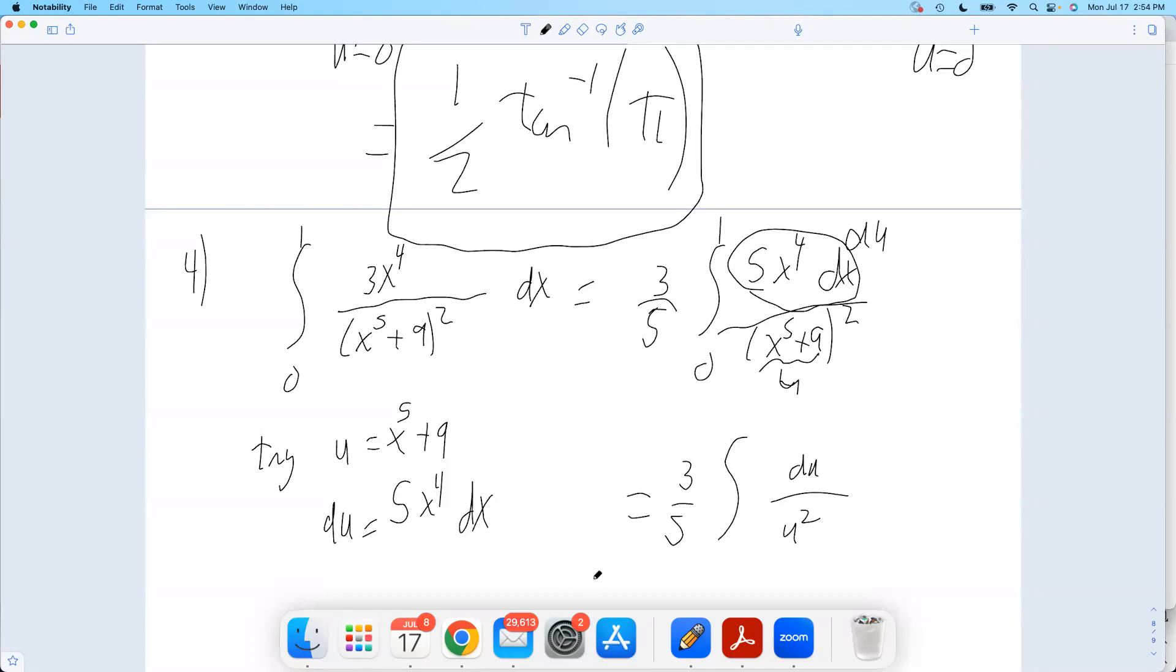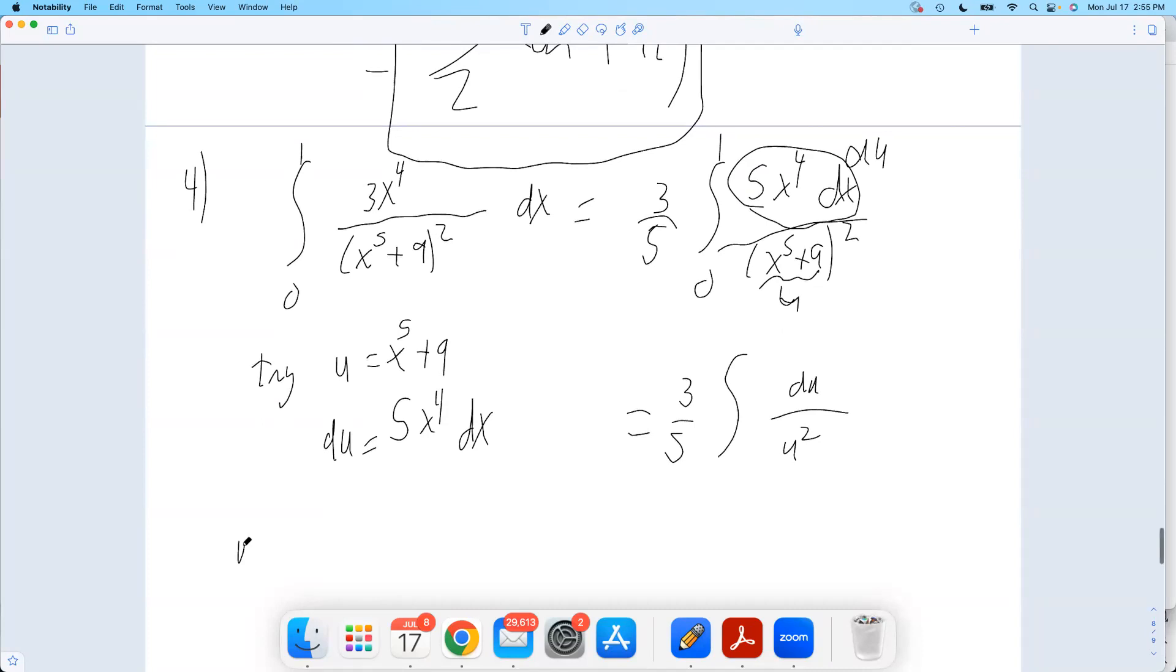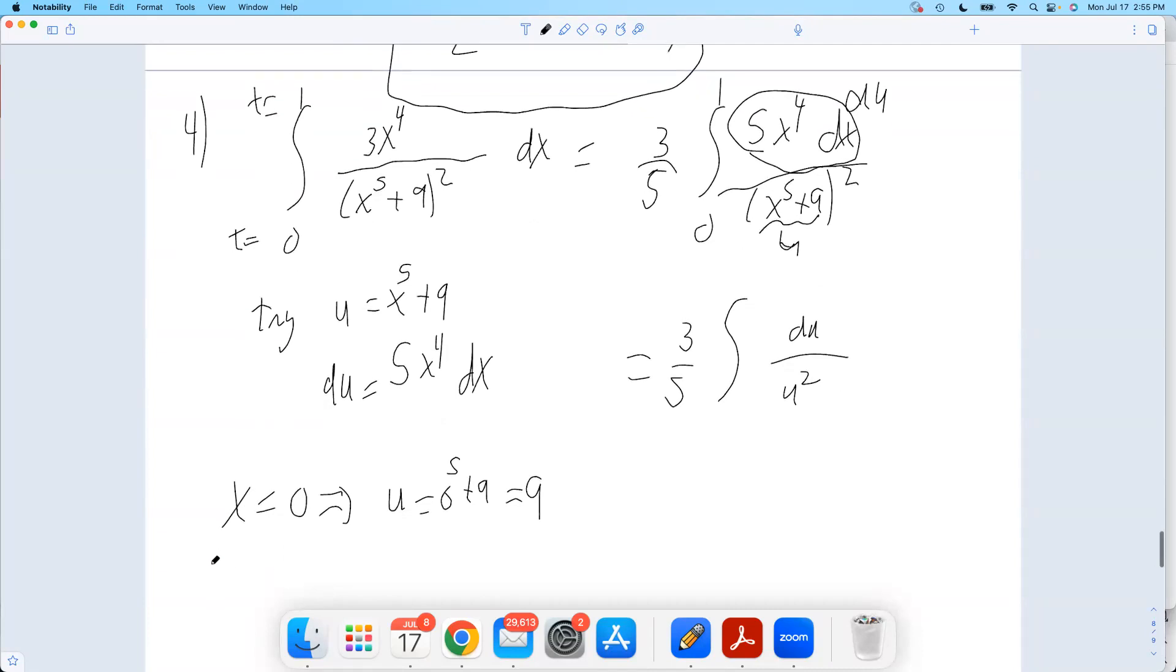Now, if I left it like this, that's a huge mistake. That's a definite integral. It's got limits on it. This answer is a number. That's an indefinite integral. That's a function. It's literally impossible for that equal sign to be true. These cannot be equal. I need to get my limits on here. So, when x equals zero, these are x limits, u will be zero to the fifth plus nine. That's nine. And when x equals one, u will be one to the fifth plus nine. That'll be ten. These are my new limits now. Now that equals true. This is a true statement. Okay.